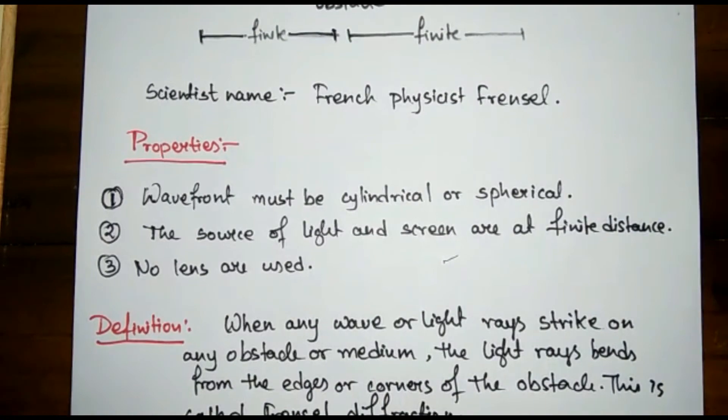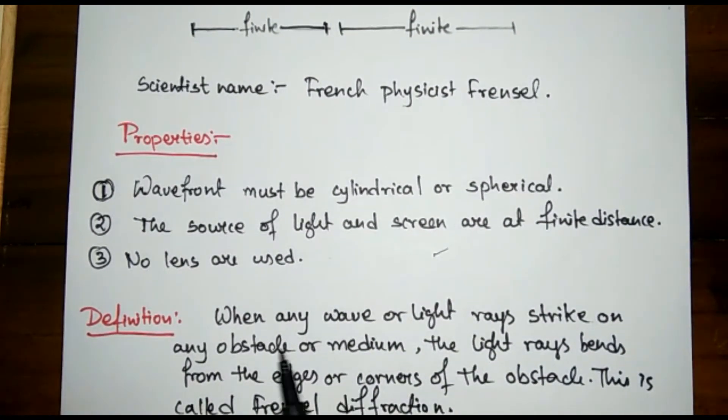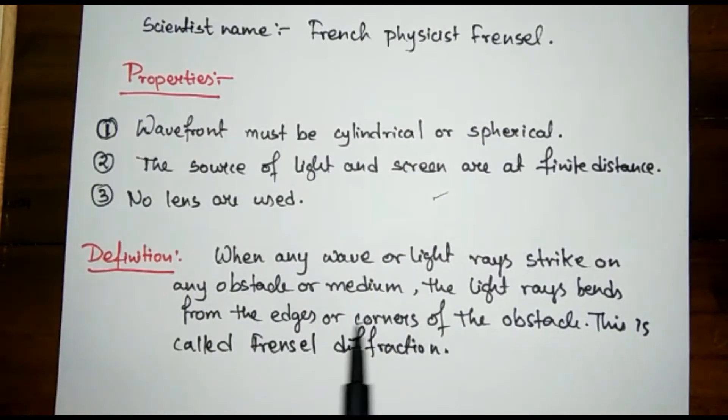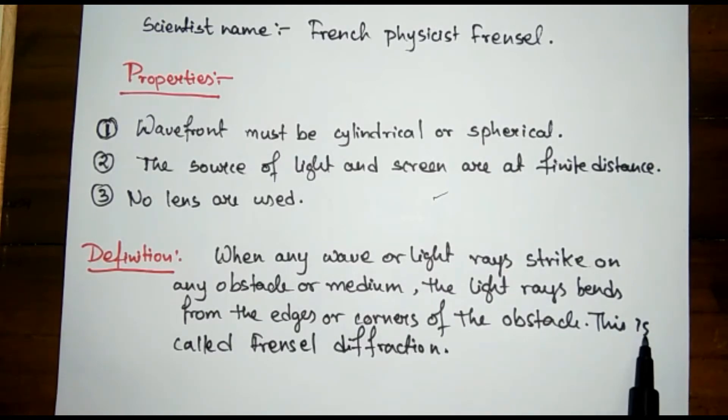You can write it as: when any wave or light rays strike on any obstacle or medium, the light rays bend from the edges or corners of the obstacle, and this is called Frenel diffraction. One point you might add in the definition is that the source and screen must be at finite distance.